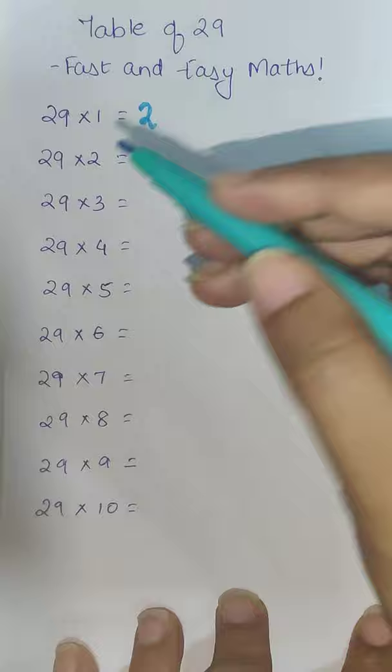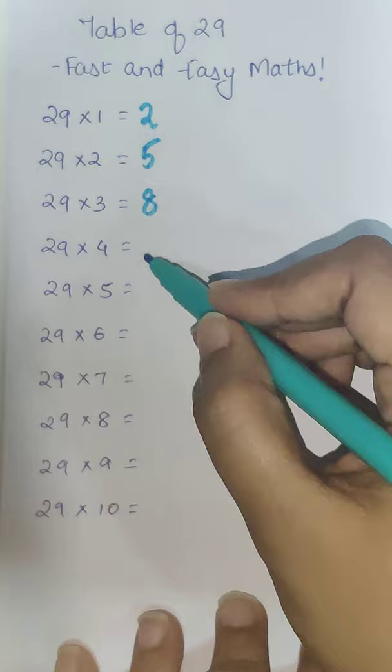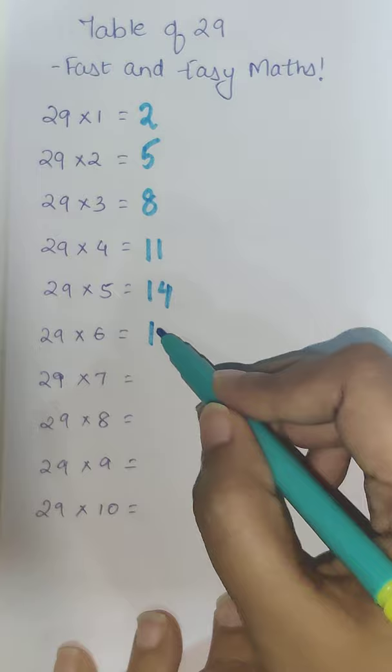2 plus 3 is going to get you 5, 5 plus 3 is going to get you 8, 8 plus 3 is going to get you 11, plus 3 will get you 14, plus 3 will get you 17.